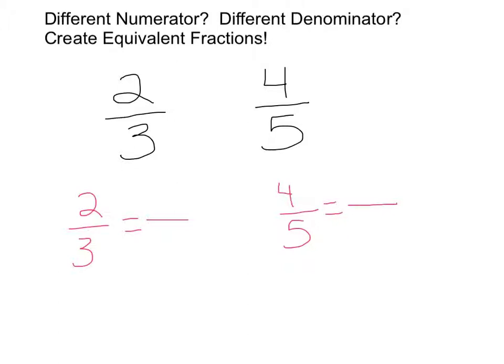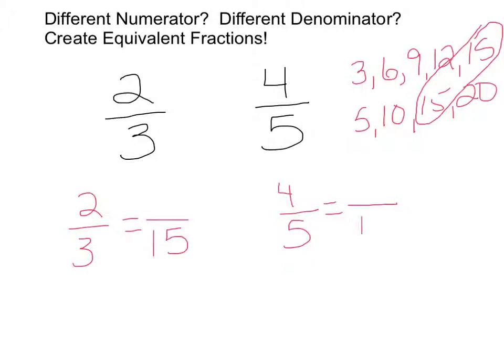Don't forget multiples, here we're talking skip counting. So if I start skip counting by threes, maybe do four or five, then I start skip counting by fives. Eventually, I'm going to find a number in common. In this case, fifteen is a multiple of three and fifteen is a multiple of five. So that means that fifteen is a denominator I can create an equivalent fraction for both fractions.